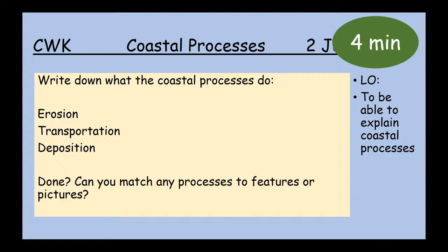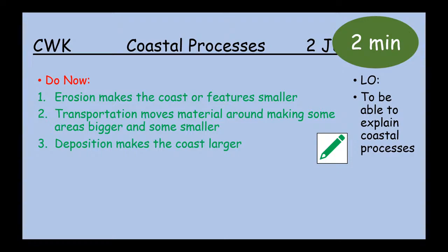Now see how much you can remember from that mini-lecture. Can you write down what the coastal processes do — what does erosion do, what does transportation do, and what does deposition do? Write in full sentences. If you finish within the four-to-five minute time limit, think about which features might be formed. Here are the answers: erosion makes the coast or features smaller; transportation moves material around, making some areas bigger and some smaller; deposition makes the coast or features bigger. Take about two minutes for corrections, then hit play.